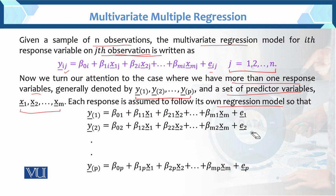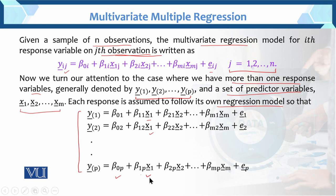Each one has a regression model generated for it — we saw this previously and checked the general layout. In the general layout we have y-prime-1, y-prime-2, up to y-vector-p, giving us P response vectors as dependent variables. These are associated with constants beta_01, beta_02, up to beta_0P, and coefficients beta_11*x1-vector, beta_12*x1-vector, up to beta_1P*x1-vector. Now, how do we solve this layout further? We check the order of Y, the order of betas, the order of X (independent variables), and the order of errors.